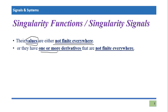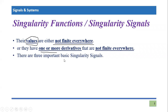Why are these important? Because there are signals that fall under these categories which are quite basic and must be understood before going to advanced topics. There are three important basic singularity signals: the first is called the impulse signal, the second is called the step signal, and the third is called the ramp signal. All these signals are valid singularity functions and follow the criteria of singularity functions.